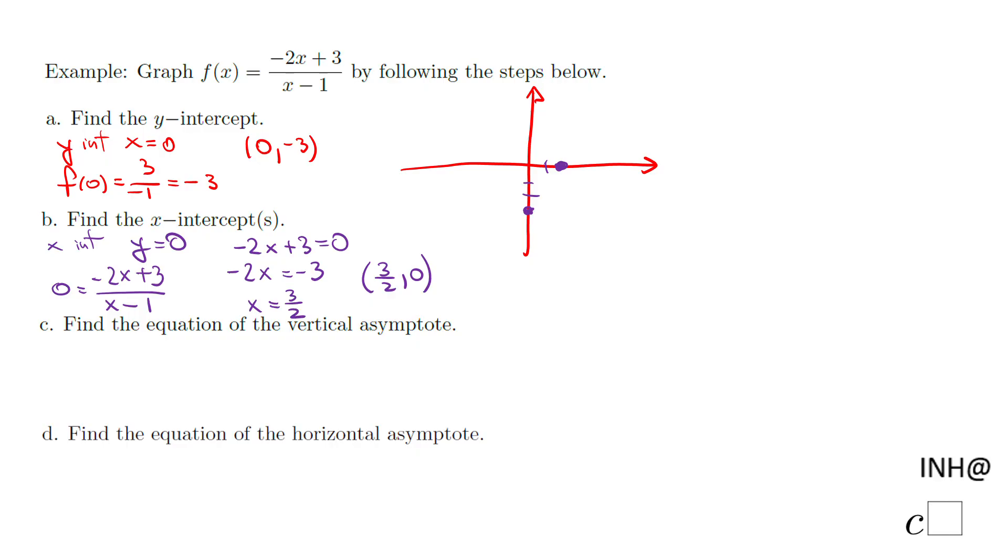Let's move now to part c where we need to find the vertical asymptote. The vertical asymptote means you take this denominator x minus one, make it equal to zero, and you have x equals one. So this is the vertical asymptote. You need to be sure you don't want to cross this vertical asymptote.